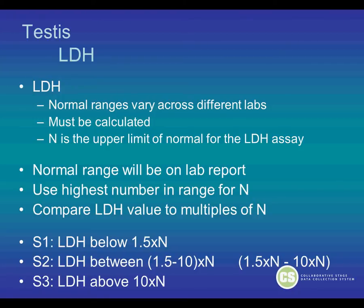The LDH normal ranges vary across different labs, so it must be calculated. N stands for the upper limit of normal for the LDH assay. The normal range will be on the lab report. You use the highest number in the range for N, and then compare the LDH value to multiples of N. S1 is LDH below 1.5 times N. S2 is LDH between 1.5 to 10 times the upper limit of normal. S3 is LDH above 10 times the upper limit of normal.